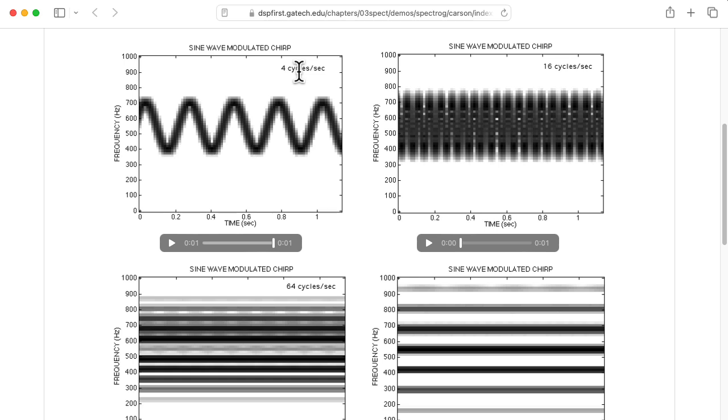Now we're going to increase from four cycles per second in terms of our frequency of modulation to 16 cycles per second. Here it's a little bit trickier, but you can still hear a distinct warble, and the overall range of frequencies that we see stays the same.